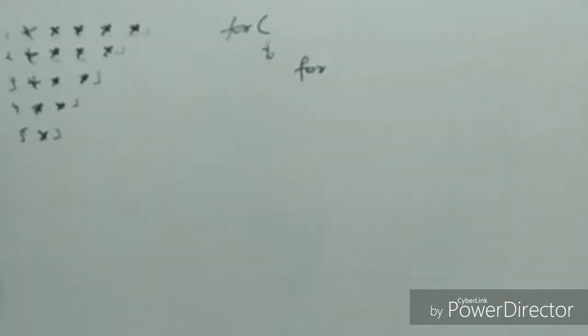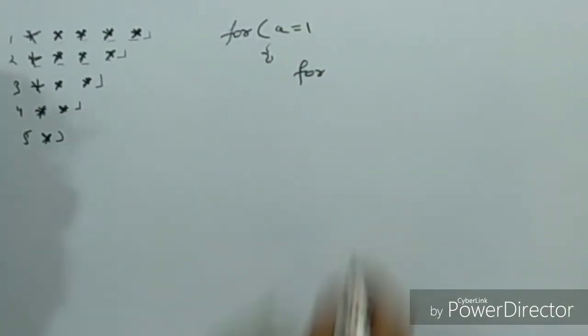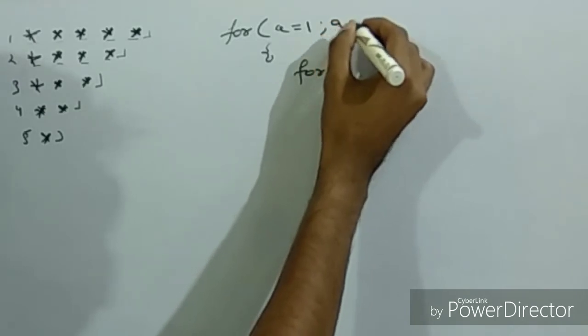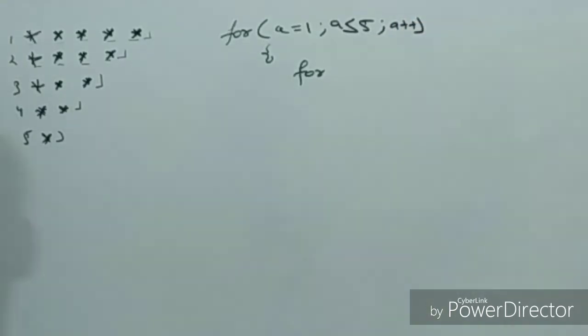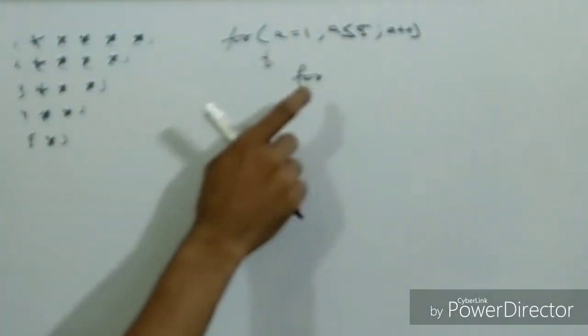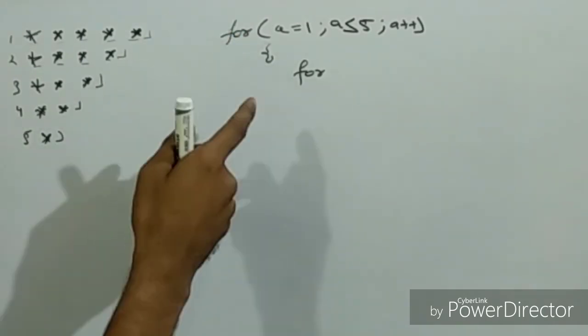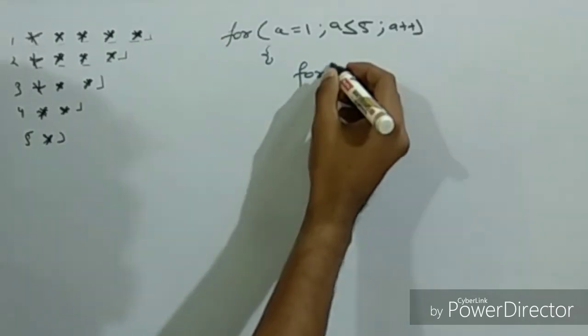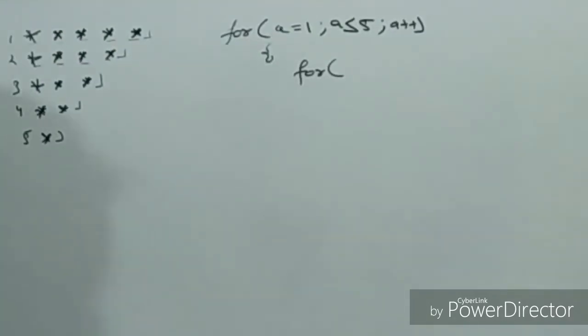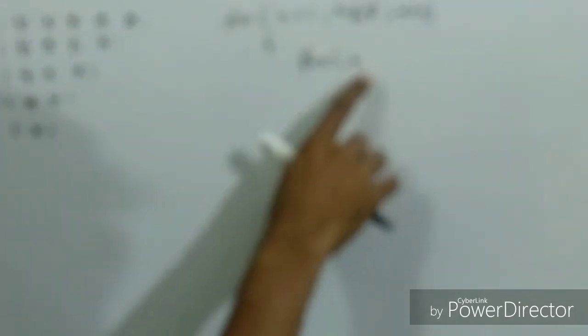Five times we will run the loop. So we will run the loop: a equals 1, a less than or equal to 5, a plus plus. Now what is the inner loop? This loop will run five times. We will insert the loop so the first loop will run five times, and inside will be another loop.